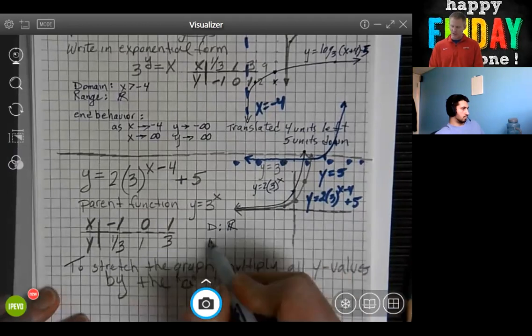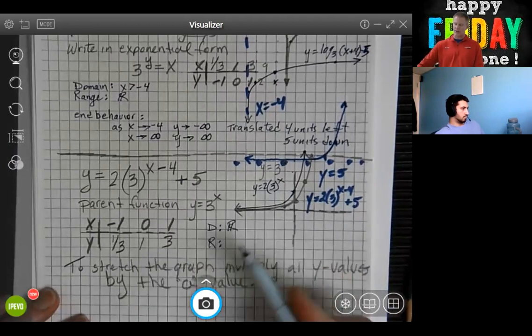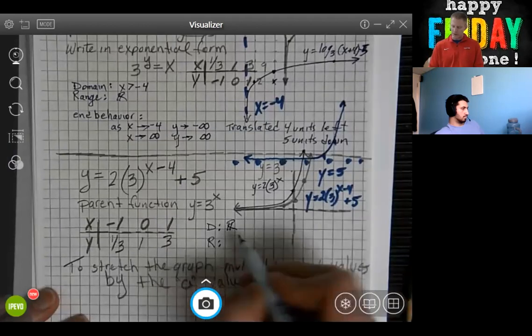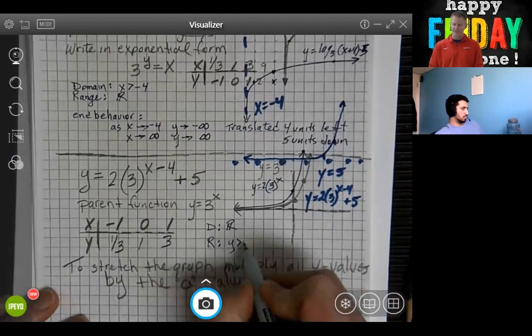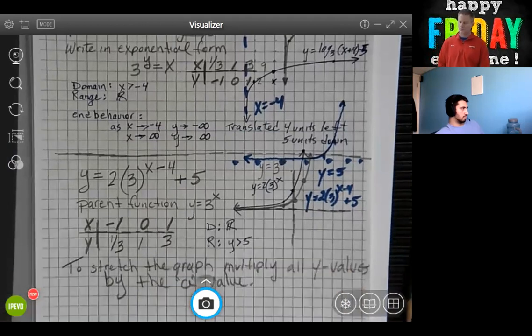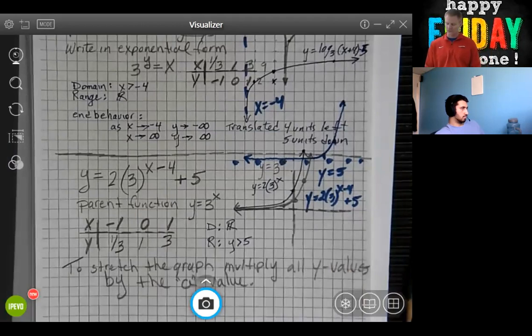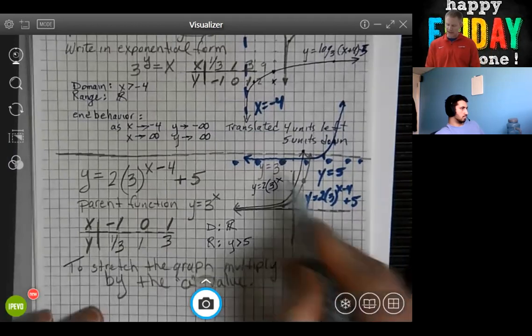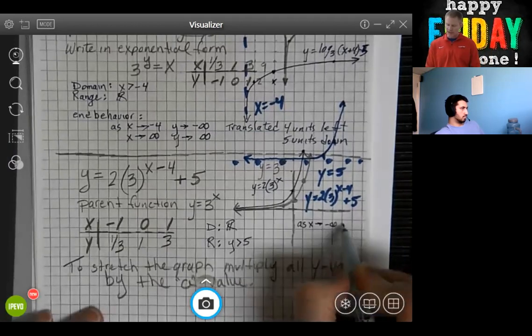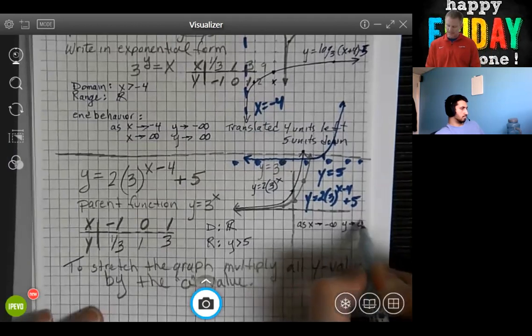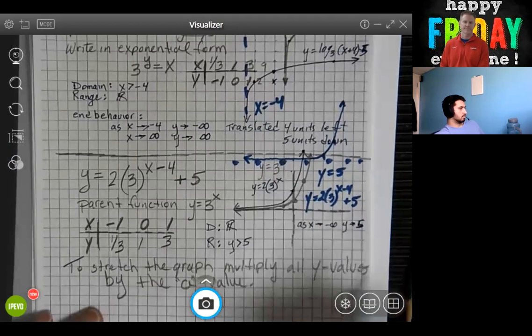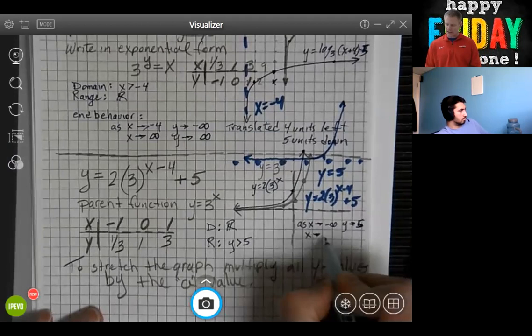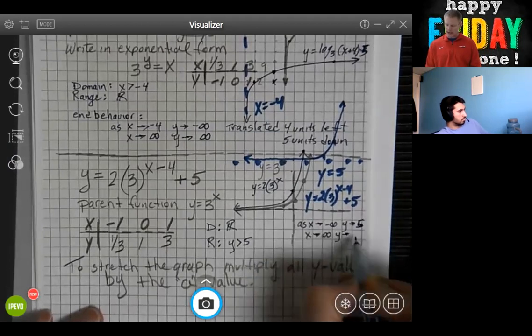The range, the y values, when you look at the final blue graph it is just going above y equals five, so greater than five. As x approaches negative infinity the graph is approaching five. And as x approaches positive infinity the graph is also approaching positive infinity.